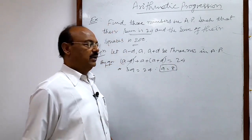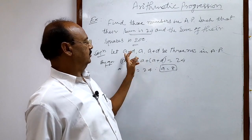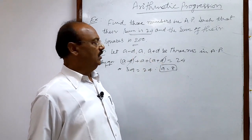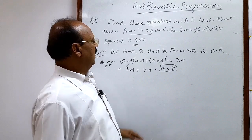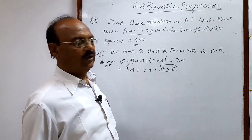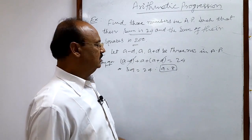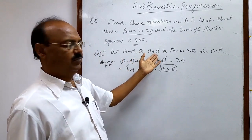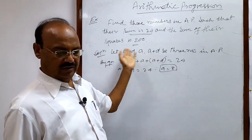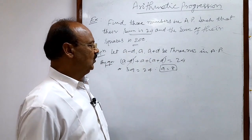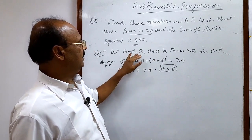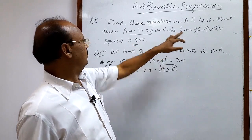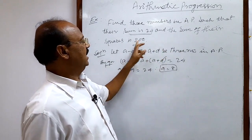We can get the value of one variable very easily — a equals 8. Now we will try to find the value of d. If we get the value of d, then we can find a minus d, a, and a plus d — all 3 numbers easily. For getting d, another condition is given: the sum of their squares is 200.